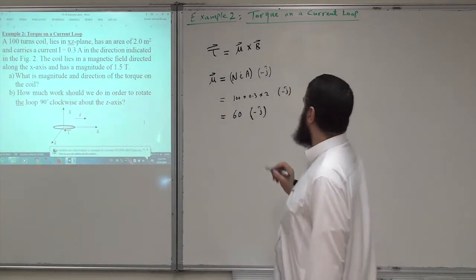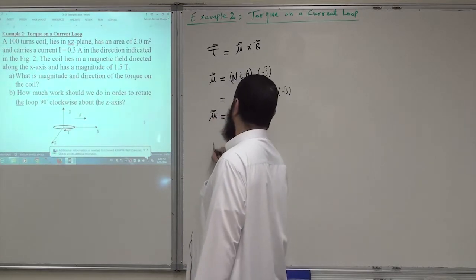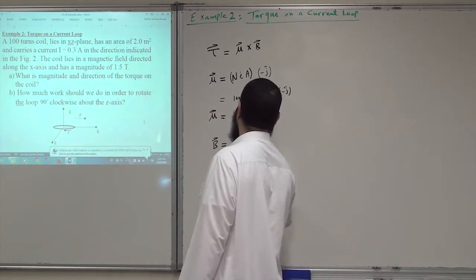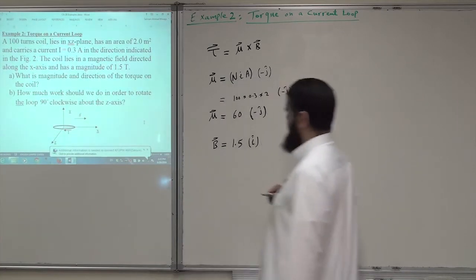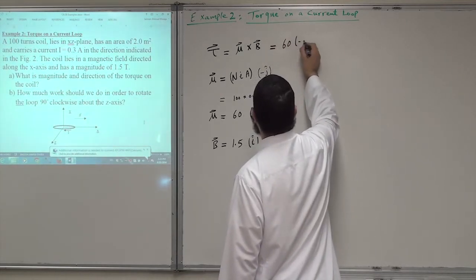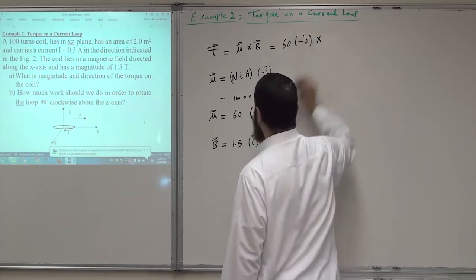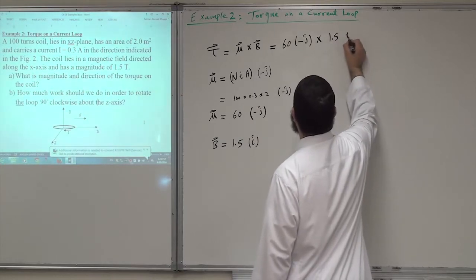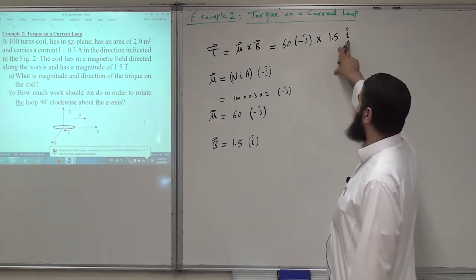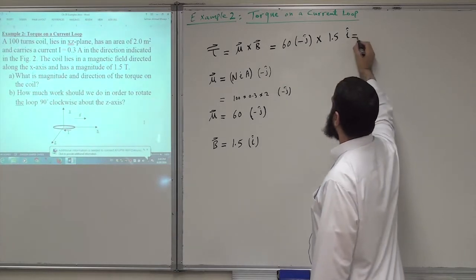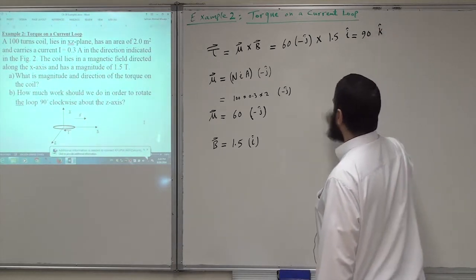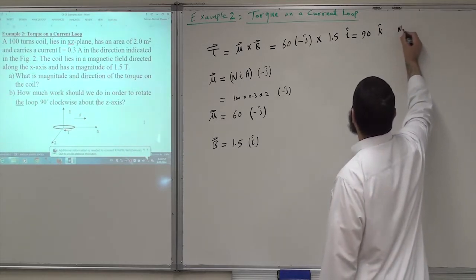So μ = -60 ĵ (negative y-axis). The magnetic field B = 1.5 î (positive x-direction). The torque is (-60 ĵ) × (1.5 î). Since ĵ × î = -k̂, we get (-60)(1.5)(−k̂), where the two negatives give a positive: result is +90 k̂.